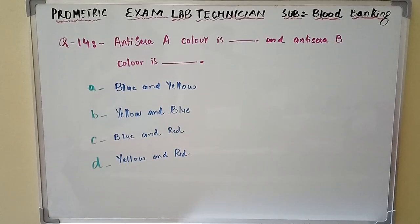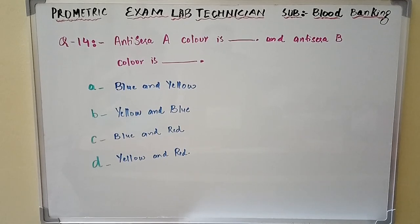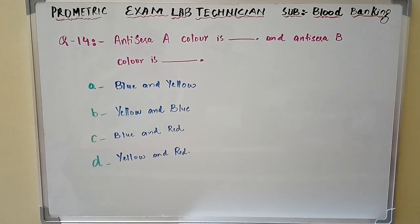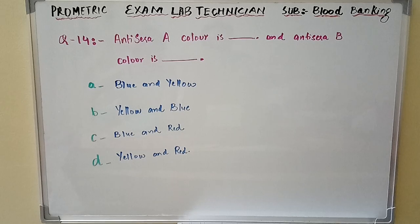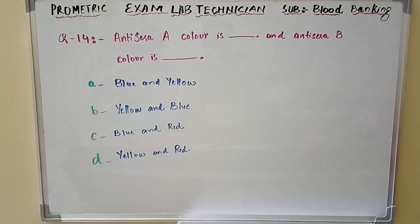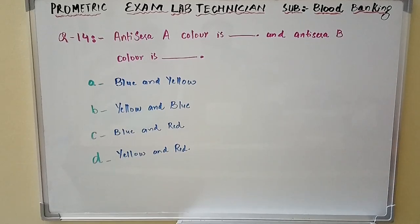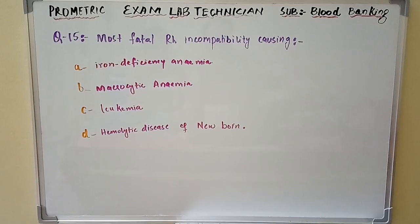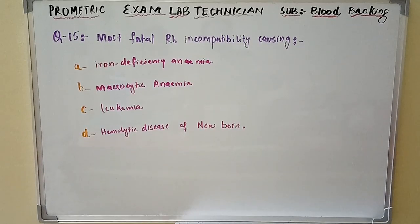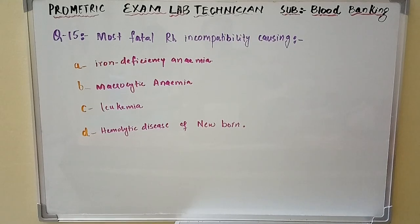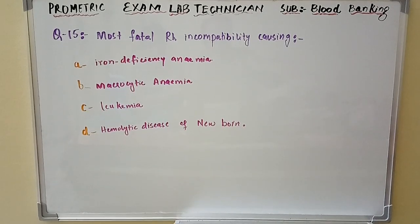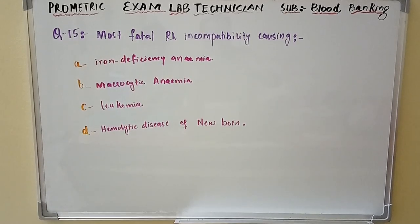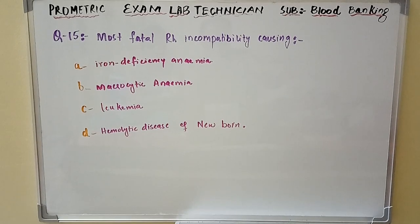Question number fourteen: Antisera A color is dash and antisera B color is dash. Option A: blue and yellow. Option B: yellow and blue. Option C: blue and red. Option D: yellow and red. Question number fifteen: Most fatal Rh incompatibility causing — Option A: iron deficiency anemia. Option B: macrocytic anemia. Option C: leukemia. Option D: hemolytic disease of newborn.